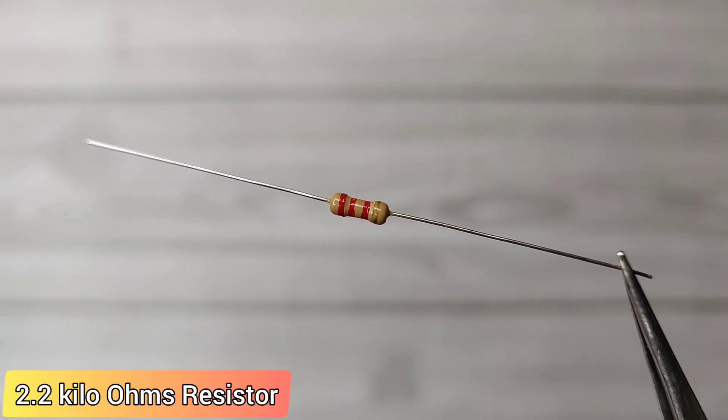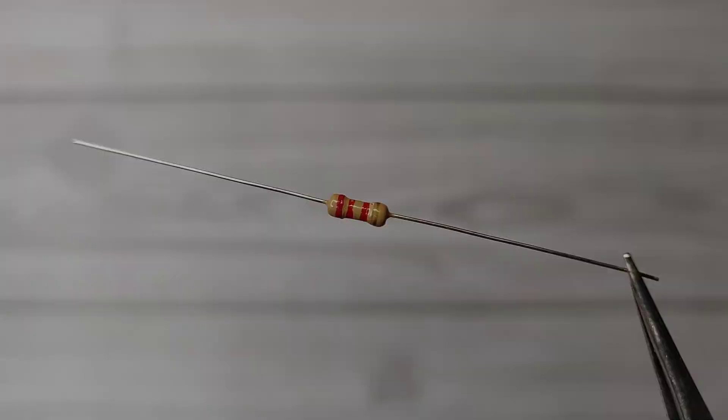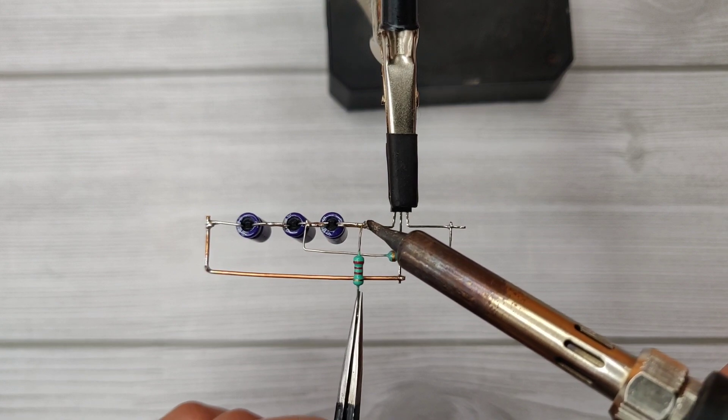Take a 2.2 kilo ohm resistor and solder it on the collector of the transistor.